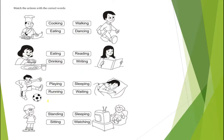Match the action with the correct word. See the picture — the chef is cooking or eating? Match the picture with the right action word: cooking. Look at the next picture: the girl is eating or drinking? Eating — match the picture with the action word eating. Look at the next picture: the boy is playing or running? Playing — match the picture with the action word playing. The last picture: the boy is standing or sitting? Standing — match the picture with the action word standing.